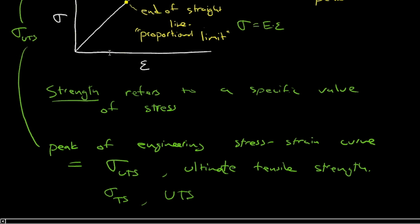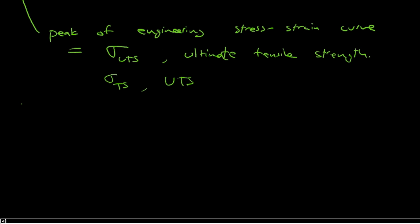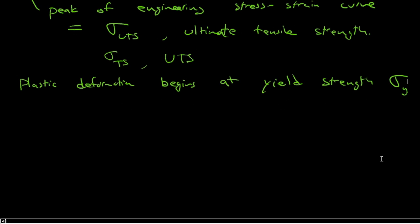Well, obviously we have to define somehow where the plastic deformation begins. So we could say that roughly we can define this term, the yield strength. Plastic deformation begins at the yield strength. So we have to define this term, the yield strength, sigma subscript y. Where plastic deformation begins.